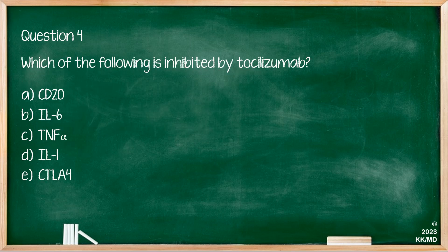Question four: which of the following is inhibited by tocilizumab? The answer is interleukin-6. Going through the others: CD20 is inhibited by rituximab; TNF-alpha is inhibited by several drugs including adalimumab or infliximab; IL-1 is inhibited by anakinra; and CTLA-4 is inhibited by abatacept.